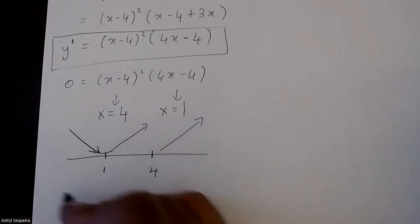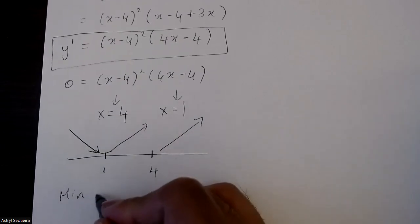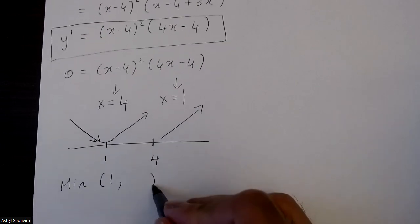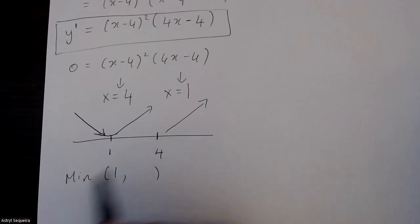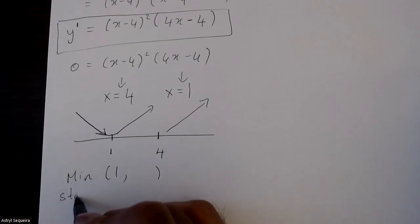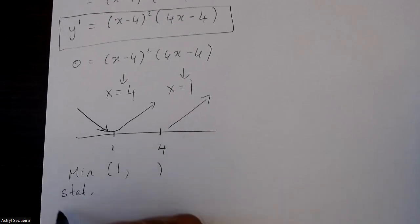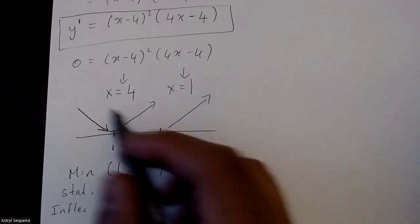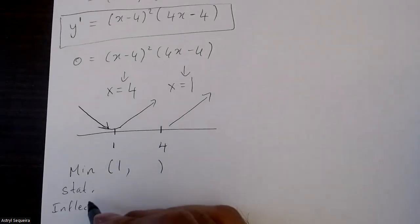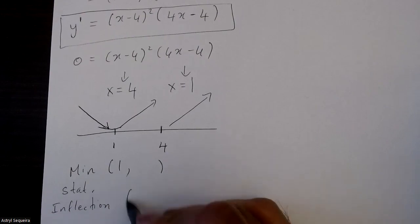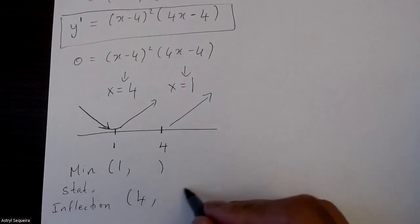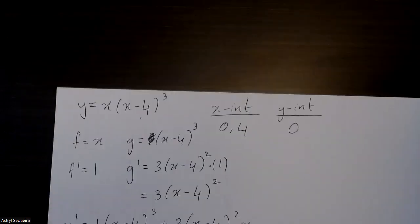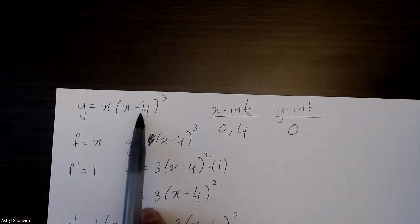So I know there is a minimum at x = 1. And at x = 4, since the function is increasing on both sides, this is a stationary inflection point — because if it's increasing and increasing (or decreasing and decreasing), that's always a stationary inflection point. I'll find the y-values by subbing these x-values into the original equation.